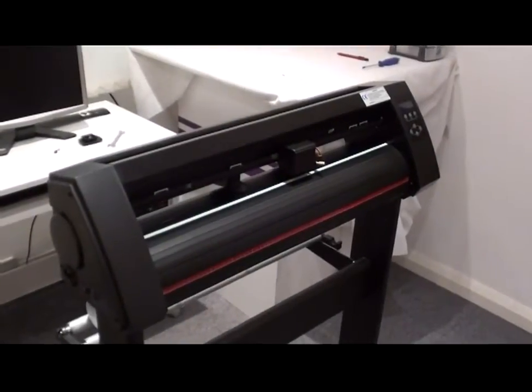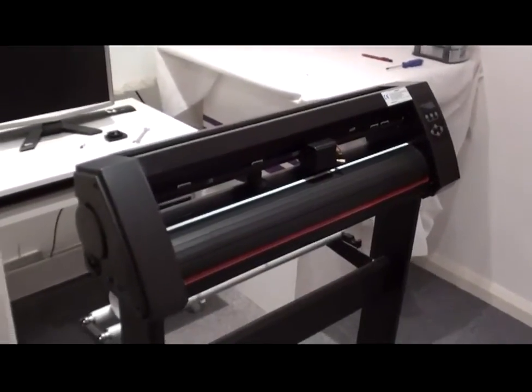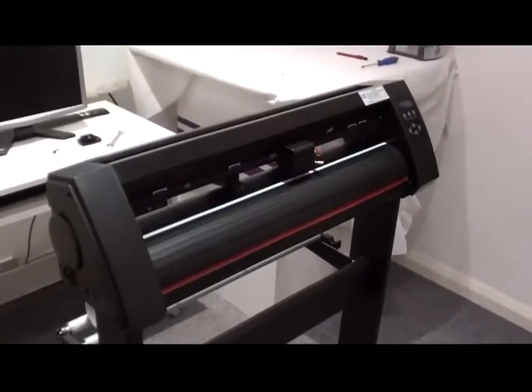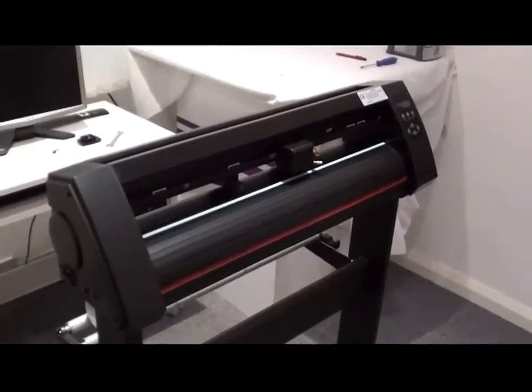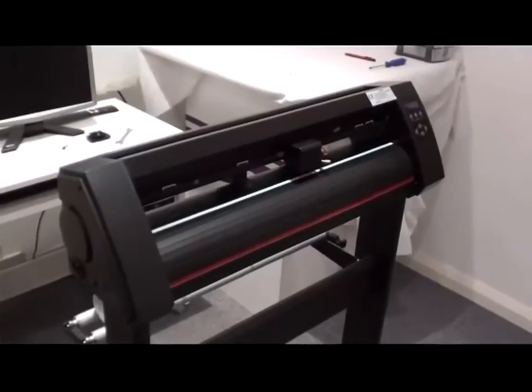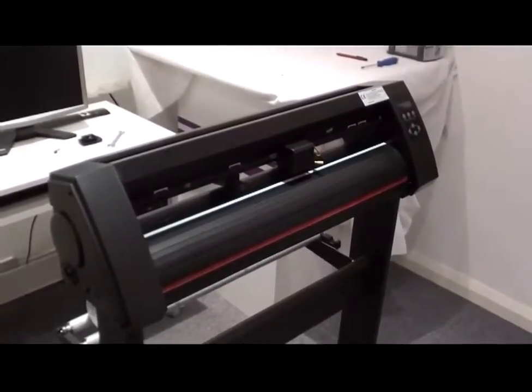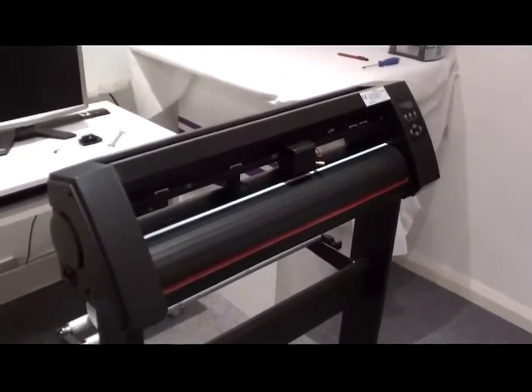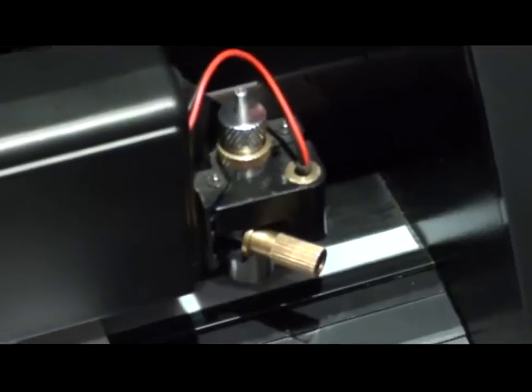Before you can contour cut, you have to make sure the contour offset is correct. By definition, what it means is the machine will store the distance between the blade and the optical eye pointer.